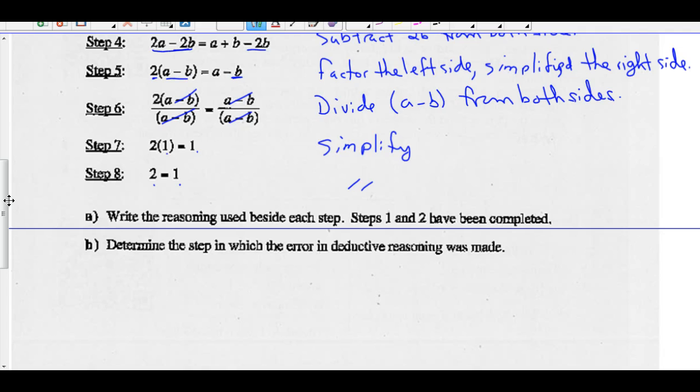I will tell you this. The step in which the error in deductive reasoning was made occurred in step 6. Step 6, what did we do in step 6? We divided A minus B. Dividing by A minus B is an error in deductive reasoning. You go back up to step 1, and what did it say in step 1? Step 1 says, let A equal B.